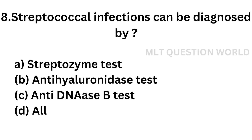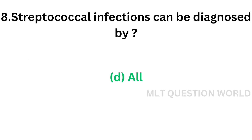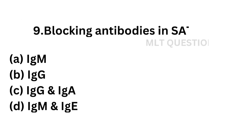Question number 8. Streptococcal infections can be diagnosed by: Option A, Streptozyme test; Option B, anti-hyaluronidase test; Option C, anti-DNase B test; Option D, all of the above. The correct answer is Option D, all of the above. Streptococcal infections can be diagnosed by Streptozyme test, anti-hyaluronidase test, and anti-DNase B test.